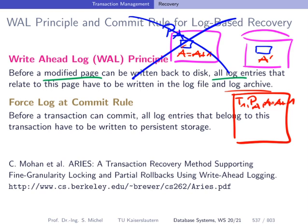If T1 is a loser transaction — not yet done when the crash happened — then we know we have to go to page PA and revert A' back to A. The information on how to undo this change is also stored in the log, in the part we call undo information. In this case it would be A = A−1. This is how the log looks: we have redo and undo information, and we will look in more detail at how this is constructed.